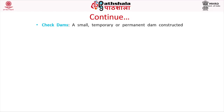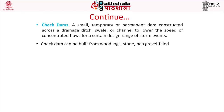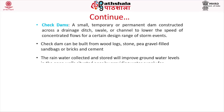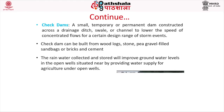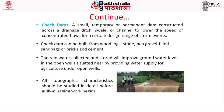A check dam is a small temporary or permanent dam constructed across a drainage ditch, swale, or channel to lower the speed of concentrated flows for a certain design range of storm events. Check dams can be built from wood logs, stones, gravel-filled sandbags, or brick and cement. The rainwater collected and stored will improve groundwater levels in open wells situated nearby, providing water supply for agriculture. All topographic characteristics should be studied in detail before gully plugging work begins.